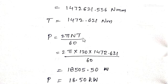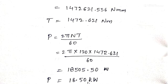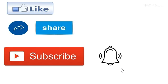Substituting in the power formula P = 2πNT/60, with N = 120 rpm and T = 1472.621 newton meter, and simplifying, we get power as 18,505.50 watts, or 18.50 kilowatts after dividing by 1000. Therefore, the power transmitted by the shaft is 18.50 kilowatts.